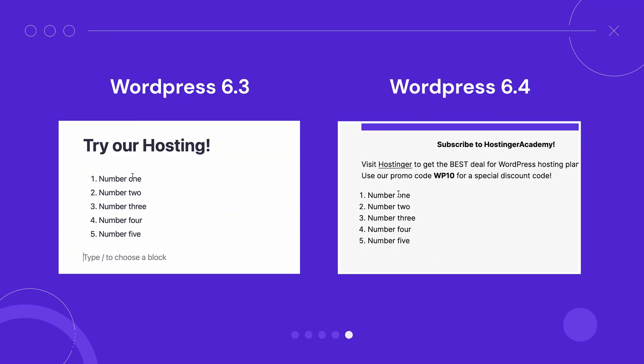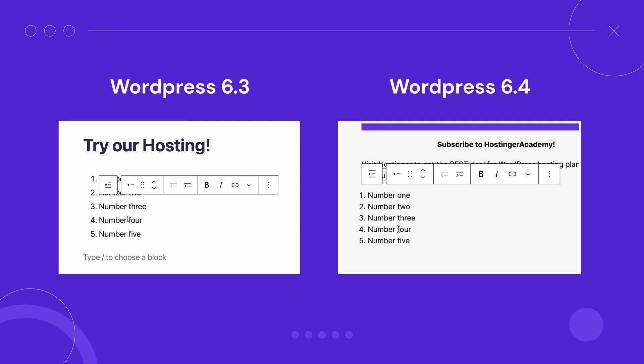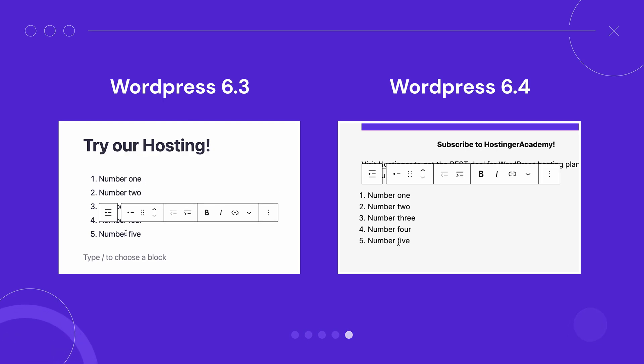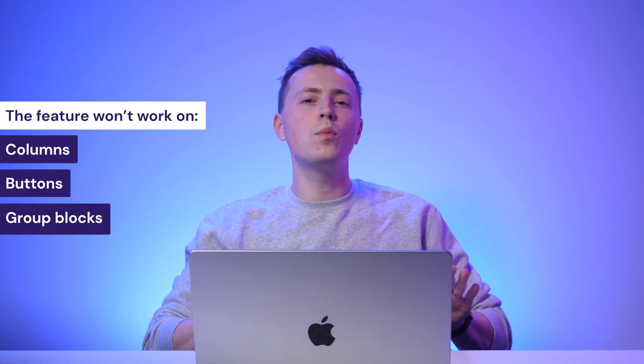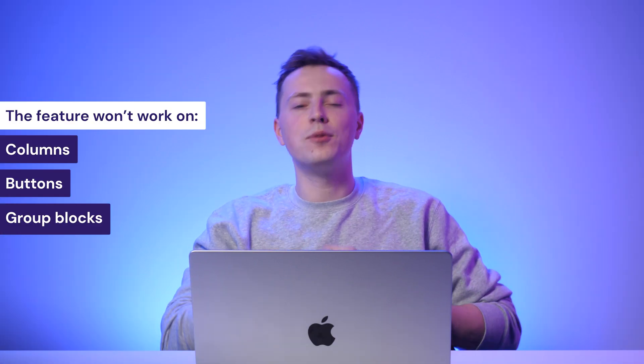The newest WordPress release has an improved toolbar for navigation, list, and quote blocks. They now have built-in child blocks by default. The toolbar remains attached to the parent block position when working with the inner content, so it won't obstruct the content within these blocks. However, note that this feature is still limited to these three blocks — it won't work on other nested blocks like columns, buttons, and group blocks.